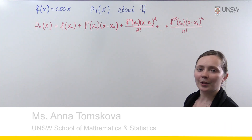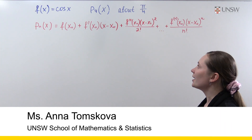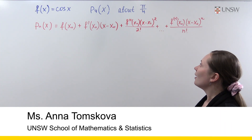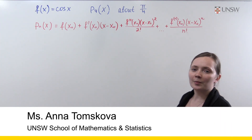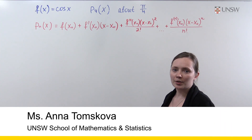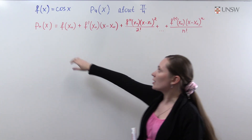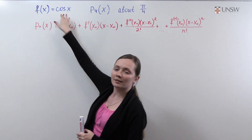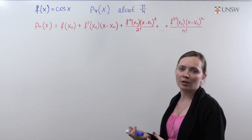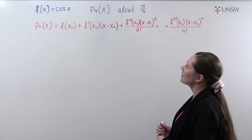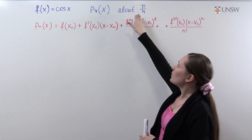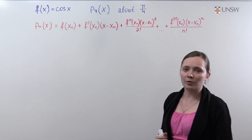In this problem we will need to find the Taylor polynomial of degree 4 for the function f of x, which is cos x, about the point pi over 4.